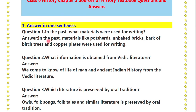Starting with Question No. 1, Answer in One Sentence. Question No. 1: In the past, what materials were used for writing? Answer: In the past, materials like pot sheds, unbaked bricks, bark of birch trees, and copper plates were used for writing.